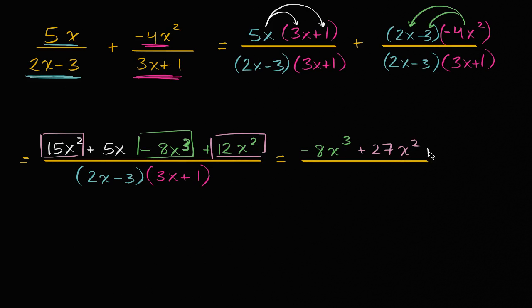And then all of that is over 2x minus 3 times 3x plus 1. And we are all done.